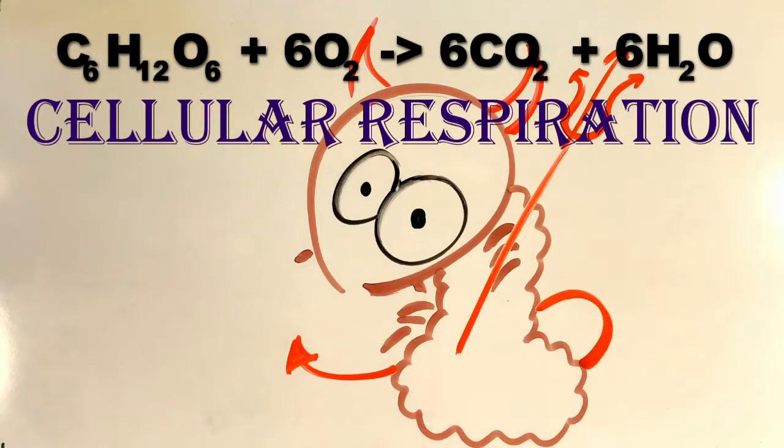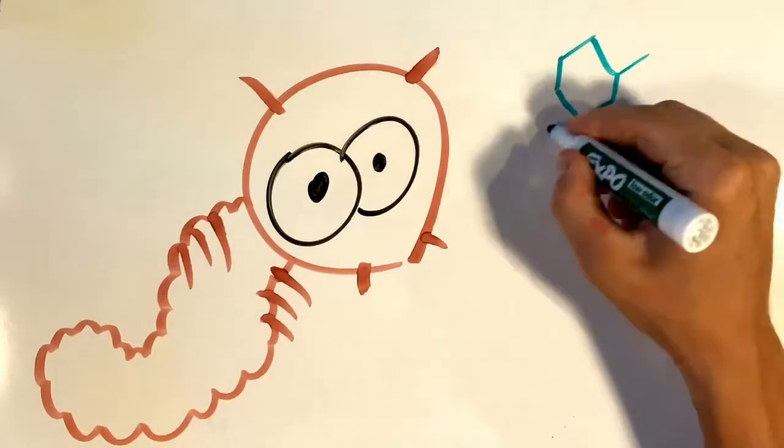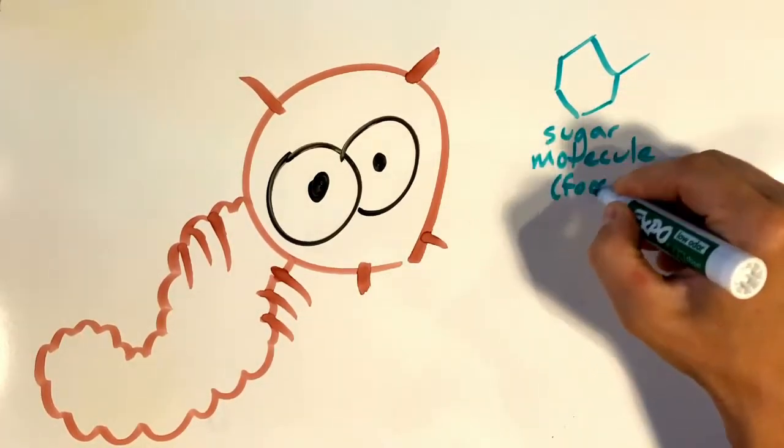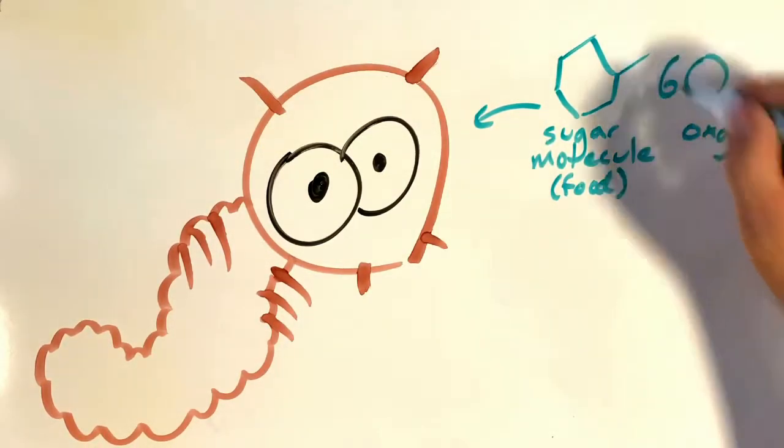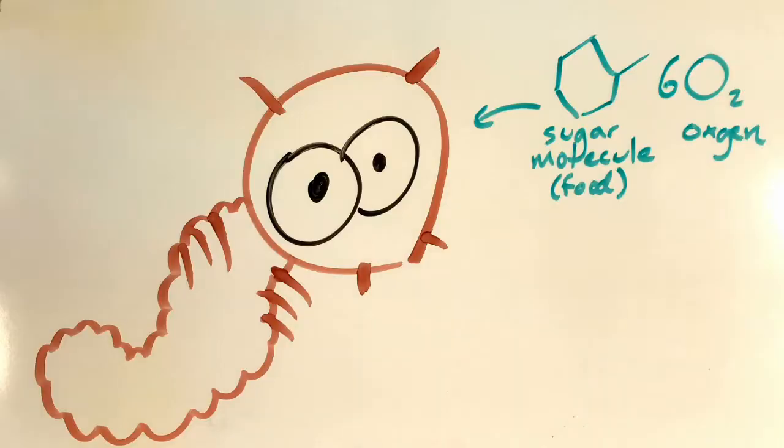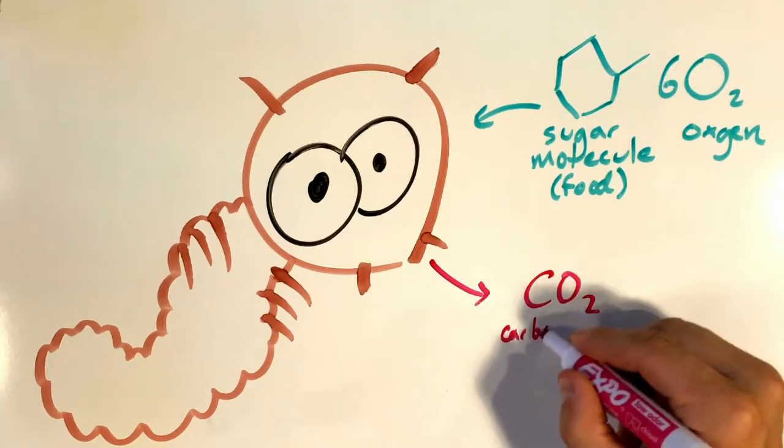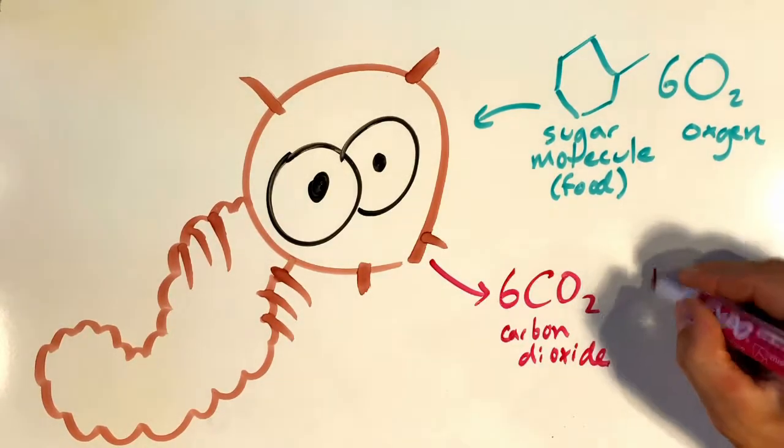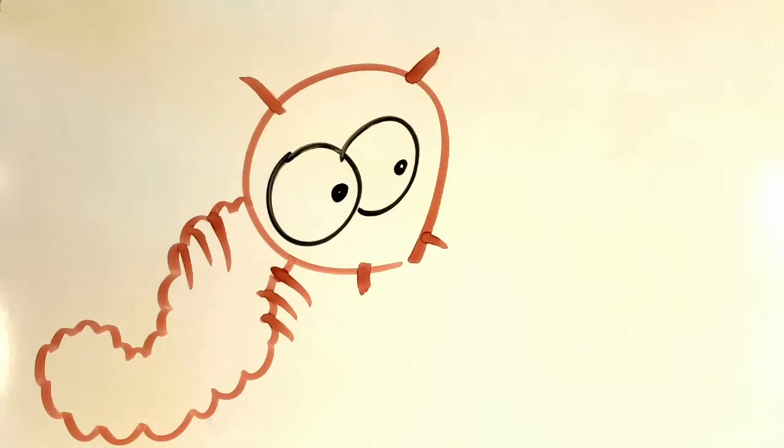So here's the complete balanced reaction for cellular respiration. This is how we usually see it written out. So let's try looking at this in a slightly different perspective. What this reaction is telling us is that for each sugar molecule that the mealworm eats, it requires 6 oxygen atoms to breathe in. And the chemicals produced as byproducts are 6 carbon dioxide molecules and 6 water molecules.